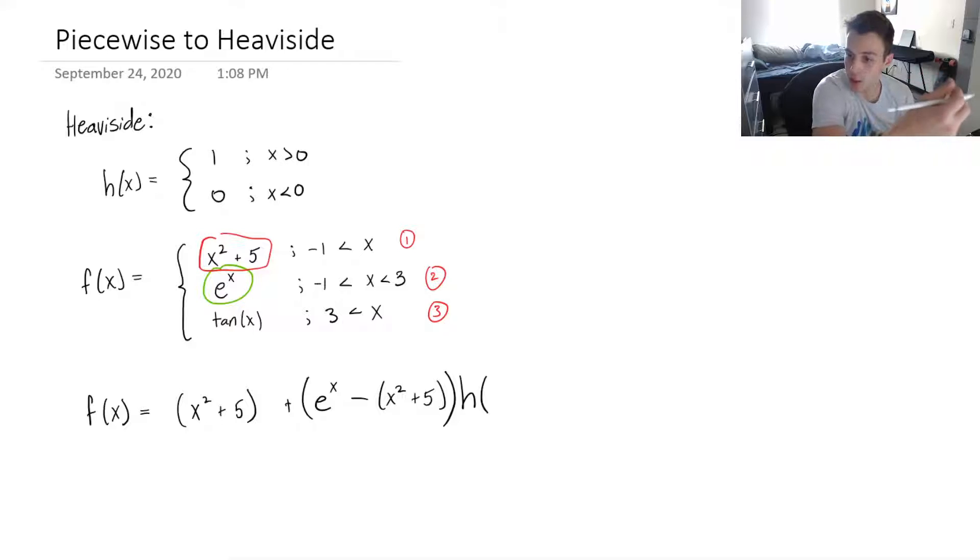So then I'm just gonna write x minus, and then this is where I plug in my negative one. Okay, and that's it. That's all you're gonna do.